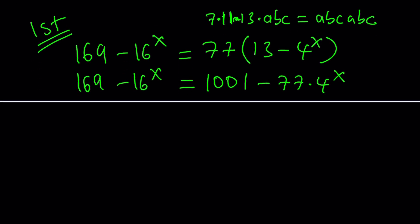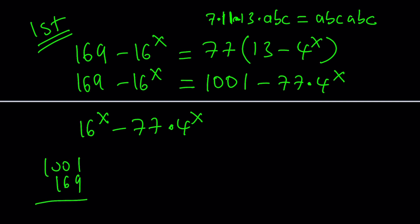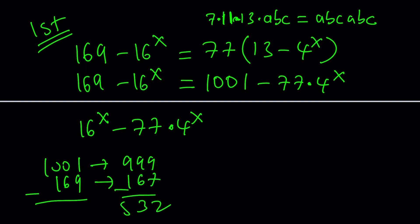So we're going to put these together, but let's put the 16 to the power x on the right-hand side and bring the 169 over. Now we're going to subtract these numbers. There's a really cool way to subtract two numbers when you have a case like this, because there's going to be a lot of carries and transfers. So why don't we just reduce this number by two and do the same thing here and subtract this way — it's going to be a lot easier. The answer is going to be the same, because the difference doesn't change. So from here, we're going to get 832.